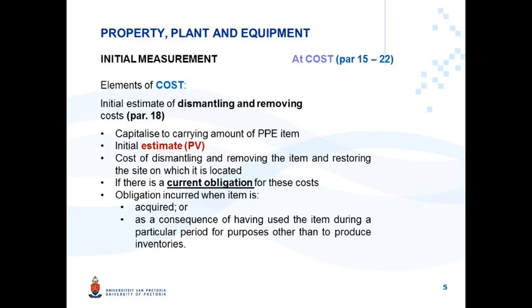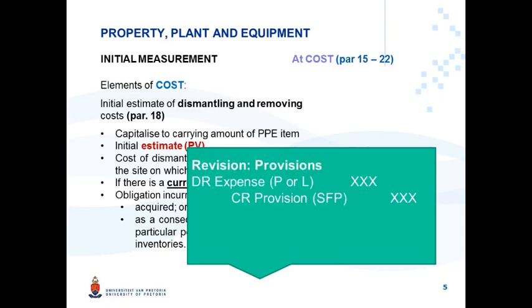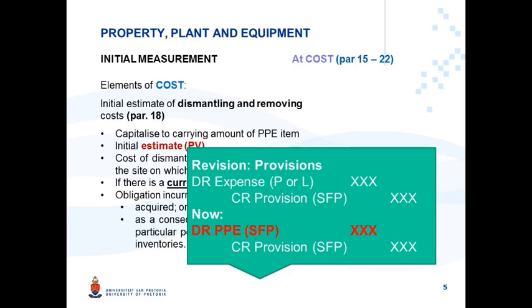To understand this accounting treatment further, let's revise the accounting treatment of provisions. A provision is also a current obligation of the entity for future expenditure. The accounting entry is: debit expense through profit or loss and credit the relevant provision in the statement of financial position. In this scenario with dismantling, removing, and restoration costs, you also have a current obligation, so you would still credit a provision, but the difference is that the debit entry will now be recognized to the PPE item at the present value of those costs.